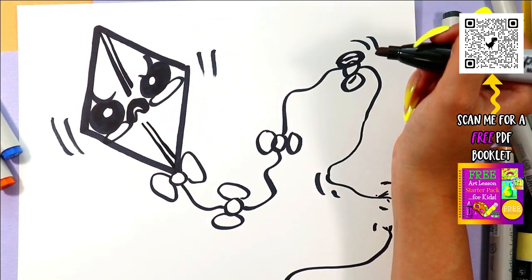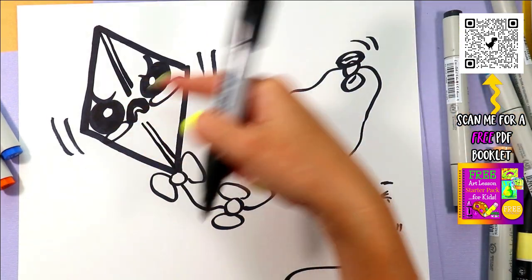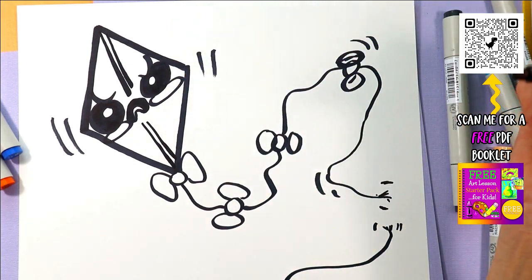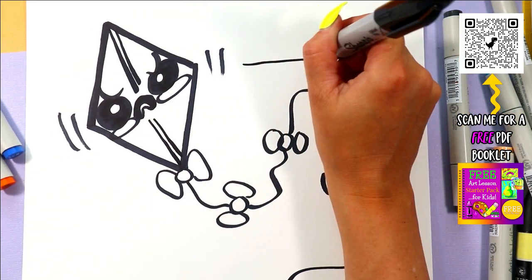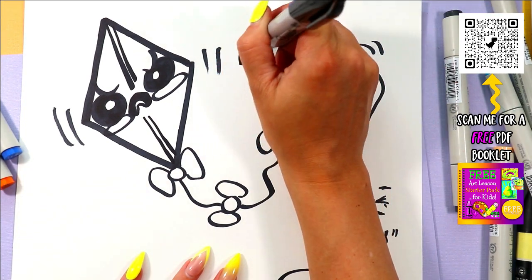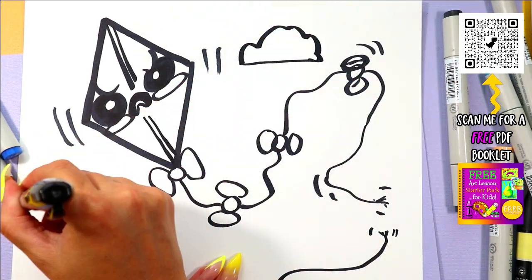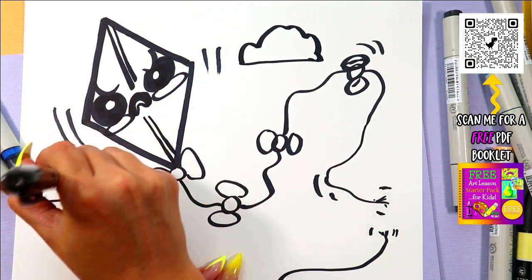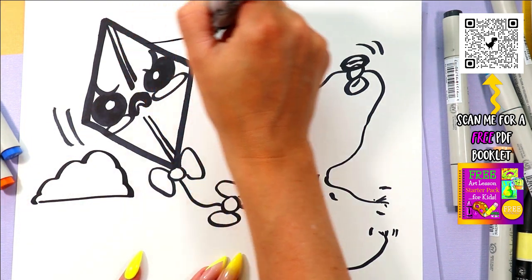For the kite frame. And we won't see the cross one because of the face there. But if you want, you can add other details around your design. Such as some clouds hanging out in the background. It's really up to you.